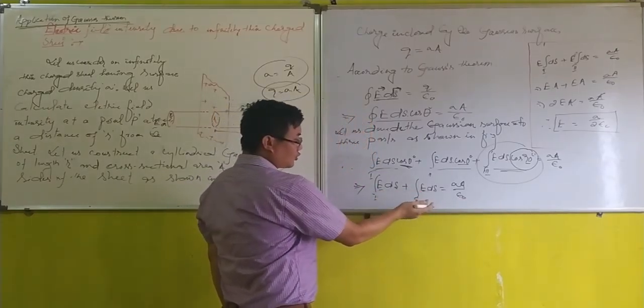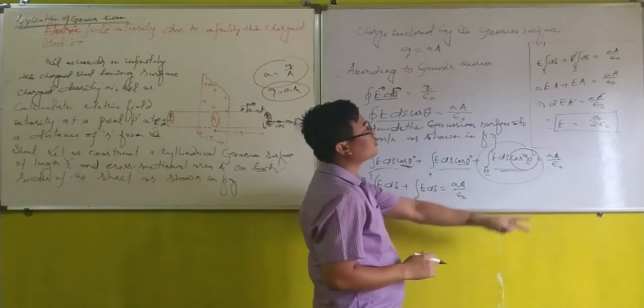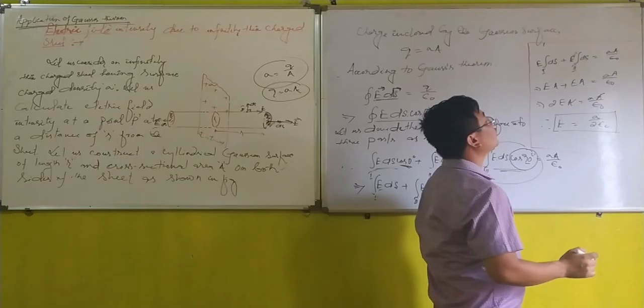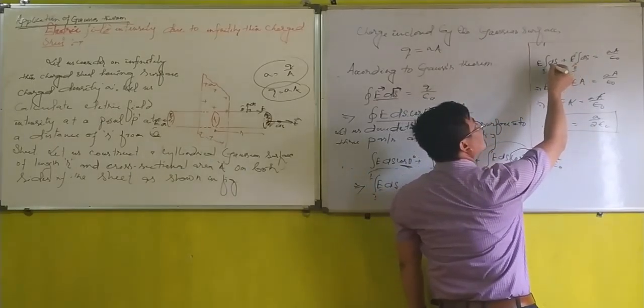Here, the electric field intensity is constant. We can take it outside the integration. Here, E integral dA plus E integral dA equals sigma A divided by epsilon naught.